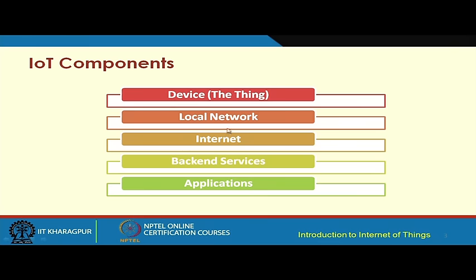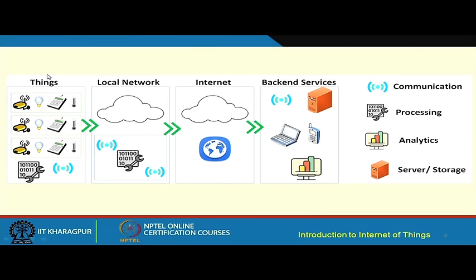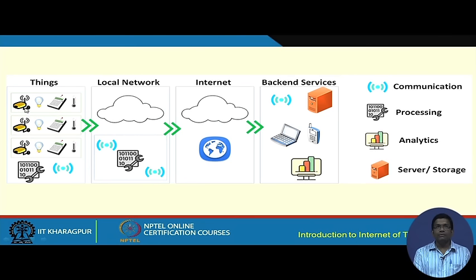Going back: we have the local network, then the internet, then backend services, and finally the applications being served. These are the basic components of IoT. The different things — physical objects fitted with different sensors — could be telephones, lighting systems, cameras, or scalar sensors like temperature sensors. These things communicate with one another with the help of wireless technologies like Zigbee, Bluetooth, and Wi-Fi.